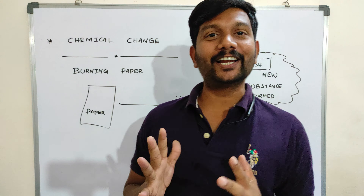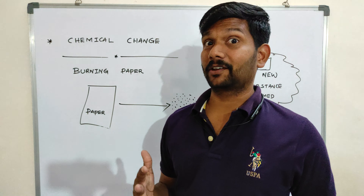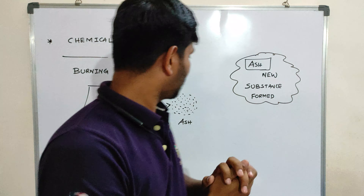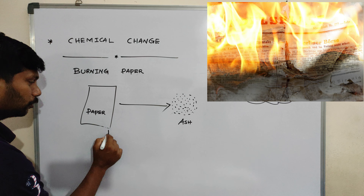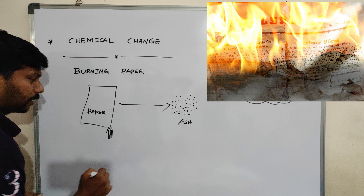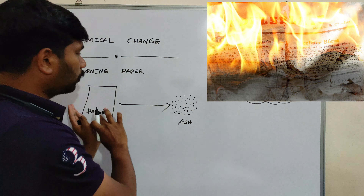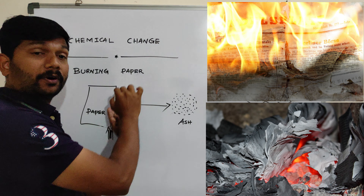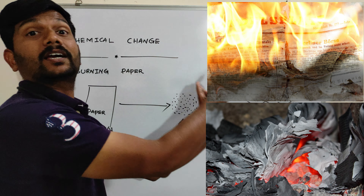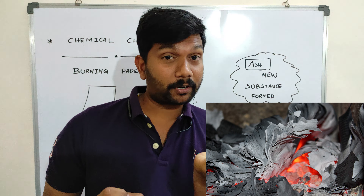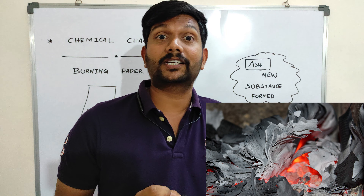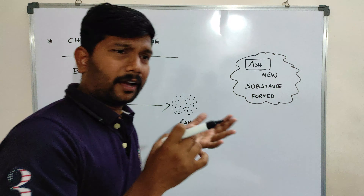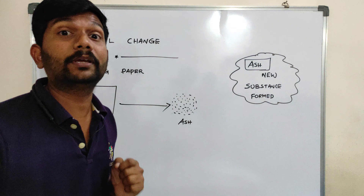Now let's move to chemical change. I have a sheet of paper and I am going to burn it. I am going to fire it up and burn it. So what will happen? Ash. The paper will be converted into ash — a black color powder substance is formed. So this is an example of chemical change.